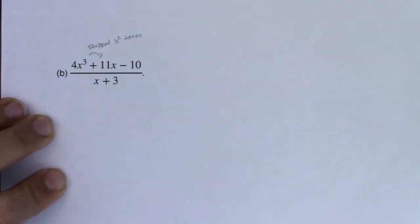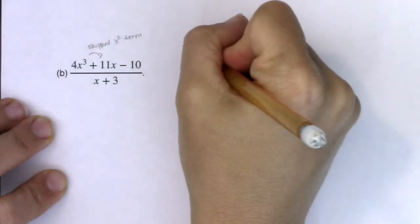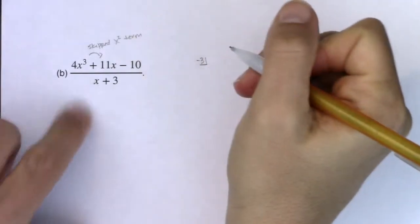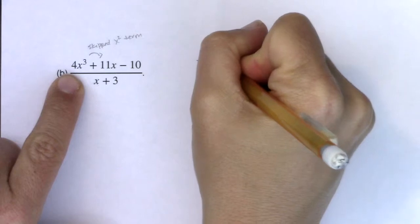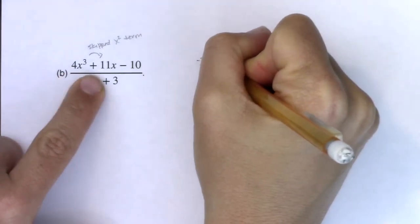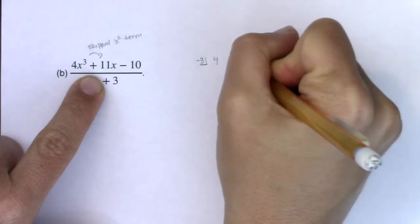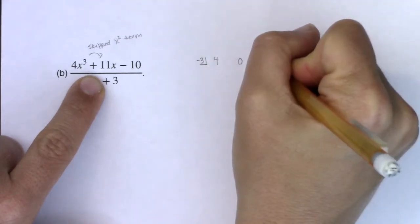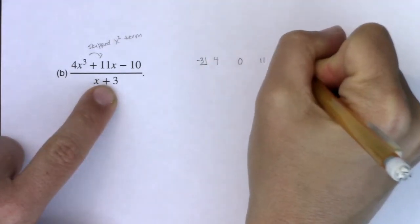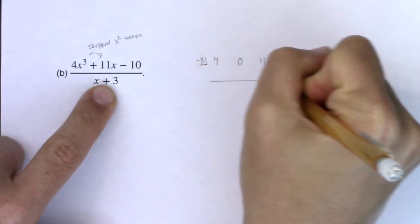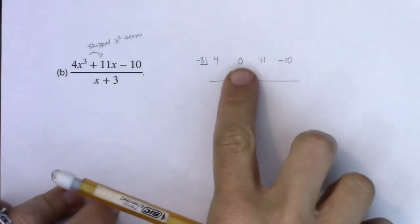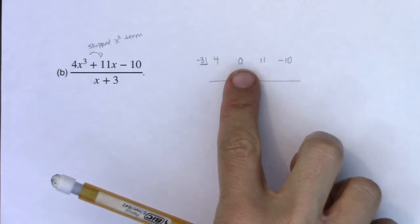All right. So if you want synthetic division to work, what you're going to need to do is you'll still put negative 3 in the house, but you need a placeholder. So you have 4x cubed. You have to put a placeholder of 0 here. You have to take note that I had no x squared terms. I've got an 11 and I've got a negative 10. Okay. And then once you have that 0 as that placeholder, you're good to go.